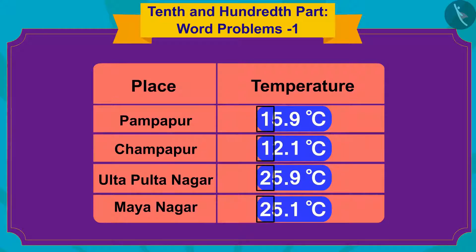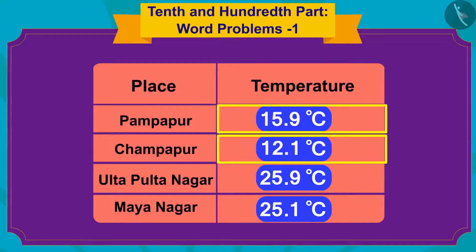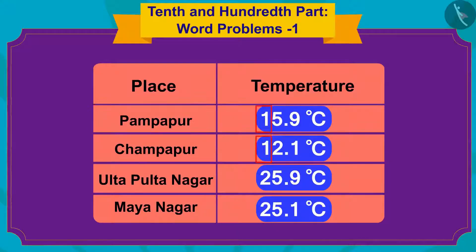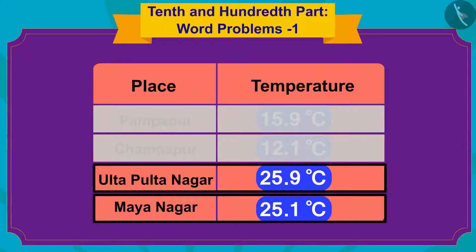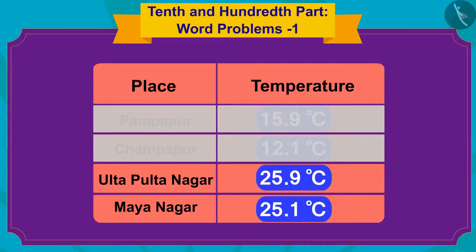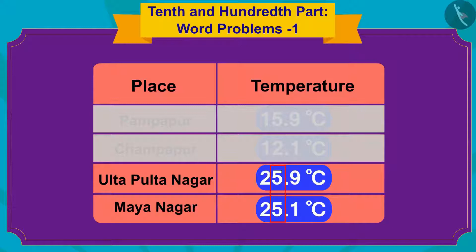We shall write down the 10th place of these temperatures and compare them. The temperatures of Champapur and Pampapur have 1 in the 10th place, and those for Ulta Pulta Nagar and Maya Nagar have 2 in the 10th place. Since 1 is lesser than 2, we will now only compare the numbers in the units places of Ulta Pulta Nagar and Maya Nagar.